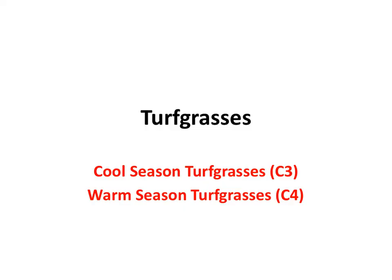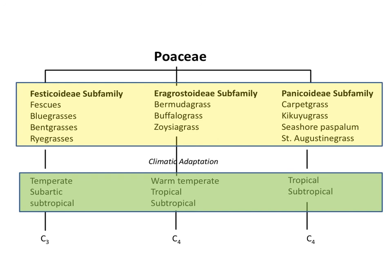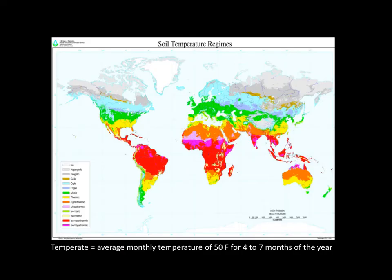We have two major types of turfgrasses known as cool season and warm season turfgrasses. Cool season turfgrasses are grouped in the Festucoideae subfamily of the family Poaceae. The major cool season turfgrasses are the fescues, bluegrasses, ryegrasses, and bentgrasses. Cool season turfgrasses are adapted to the temperate regions of the world, shown here as the green region of the map. Temperate is defined as an average monthly temperature of 50 degrees Fahrenheit for four to seven months of the year. The major temperate regions where cool season turfgrasses are maintained, although not exclusively, is in the northern United States and Europe.